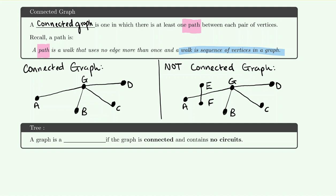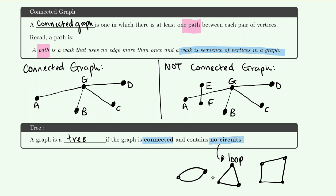Now we have another definition: that of a tree. For a graph to be called a tree, it must be connected and contain no circuits. A circuit is a closed loop — you can start, go in a circle, and reach all the vertices. If something is a tree, it does not have any of these loops as part of the graph, and it must be connected.